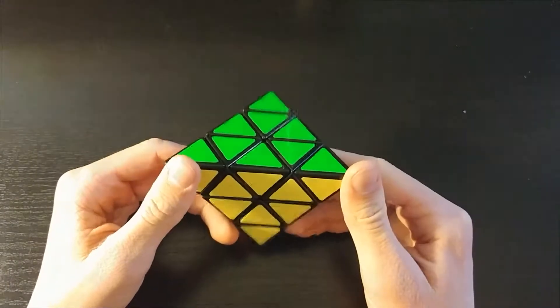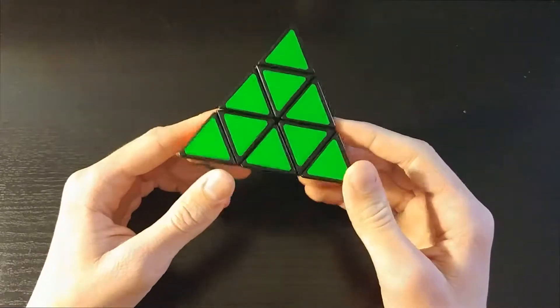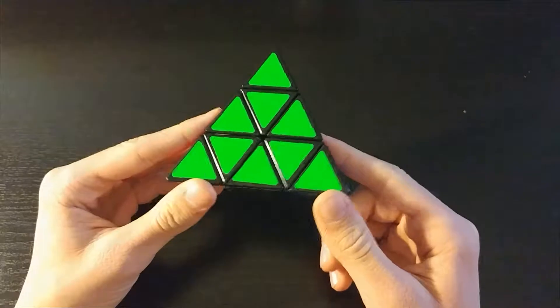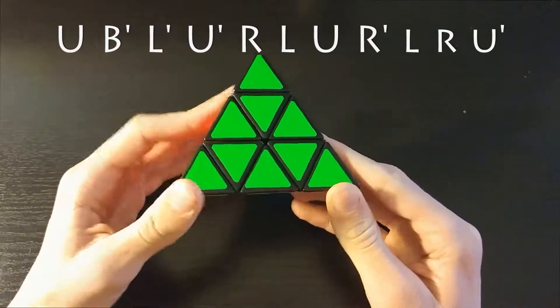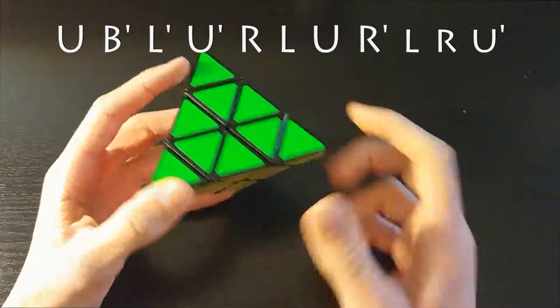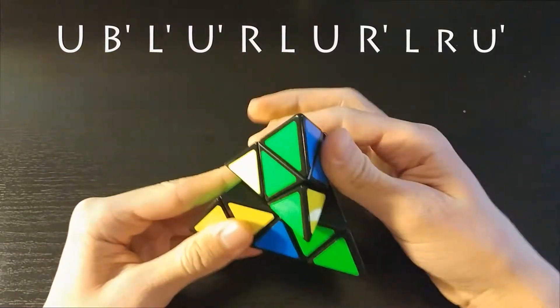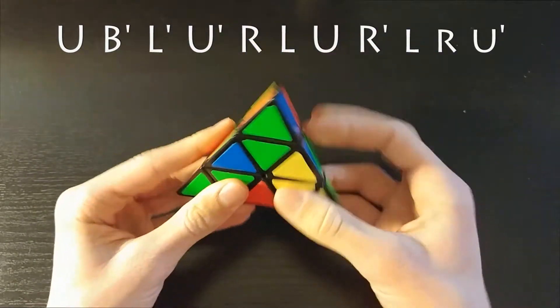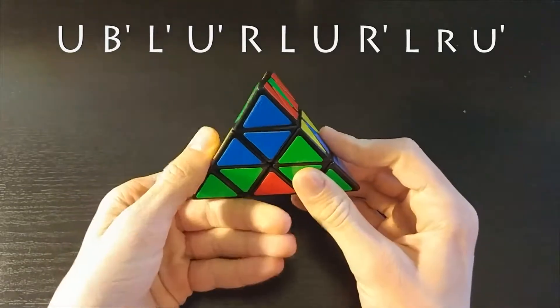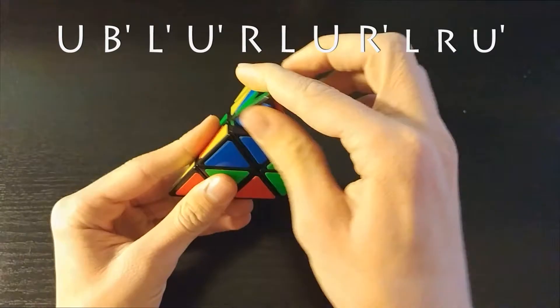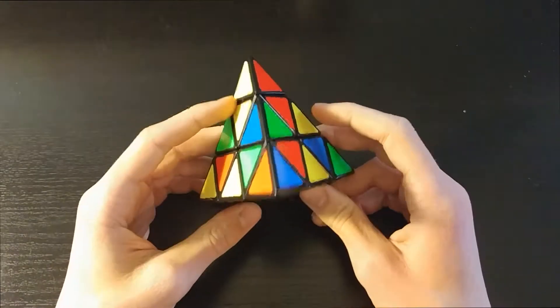If you want to follow the scramble that I'm going to be using for this first walkthrough, it'll be at the top of the screen right now, and make sure that you put green on front, yellow on bottom.